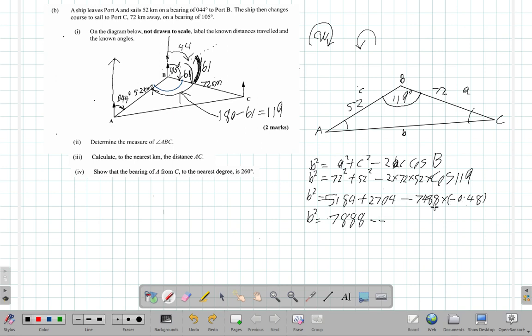So I have 7,488 times 0.48 giving me 3,594. This will end up as 7,888 plus 3,594. So b squared is equal to, when I add them, 7,888 plus 3,594 equals...